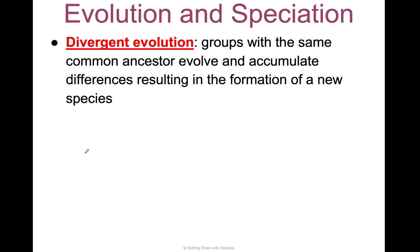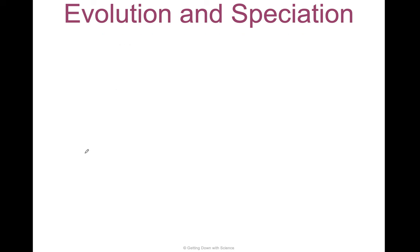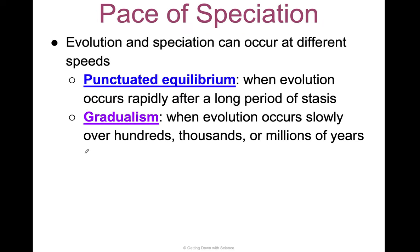Divergent evolution is when groups with the same common ancestor evolve and accumulate differences, resulting in the formation of new species. This is an example of gradualism — that slow accumulation of mutations over hundreds of thousands to millions of years.